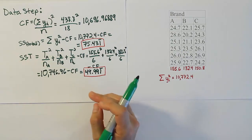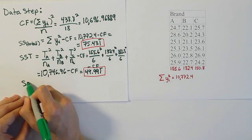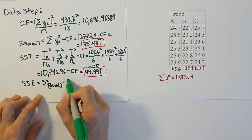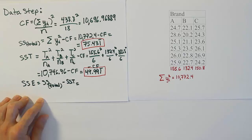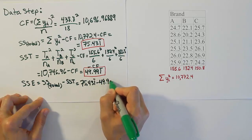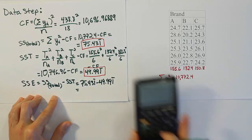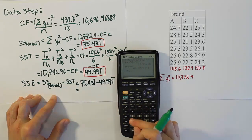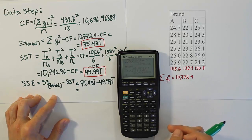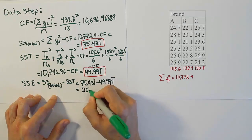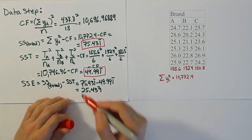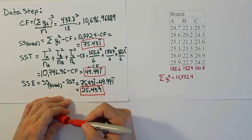Next we calculate the sum of squares for error, which is simply the total sum of squares minus the sum of squares for treatment. So that's 75.431 repeating minus 49.991 repeating, which works out to 25.439 repeating. Now we have all the values needed to fill in the ANOVA table.